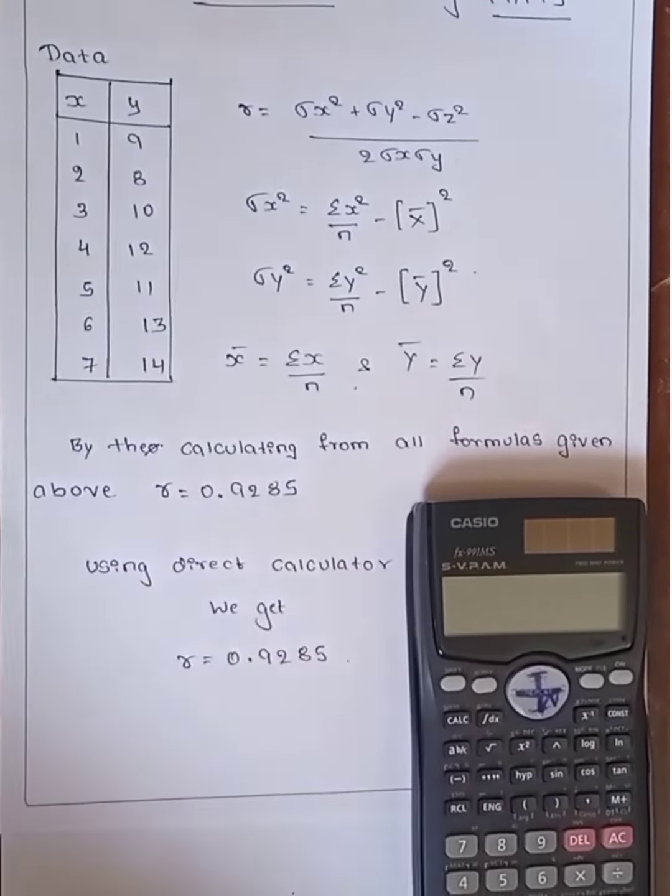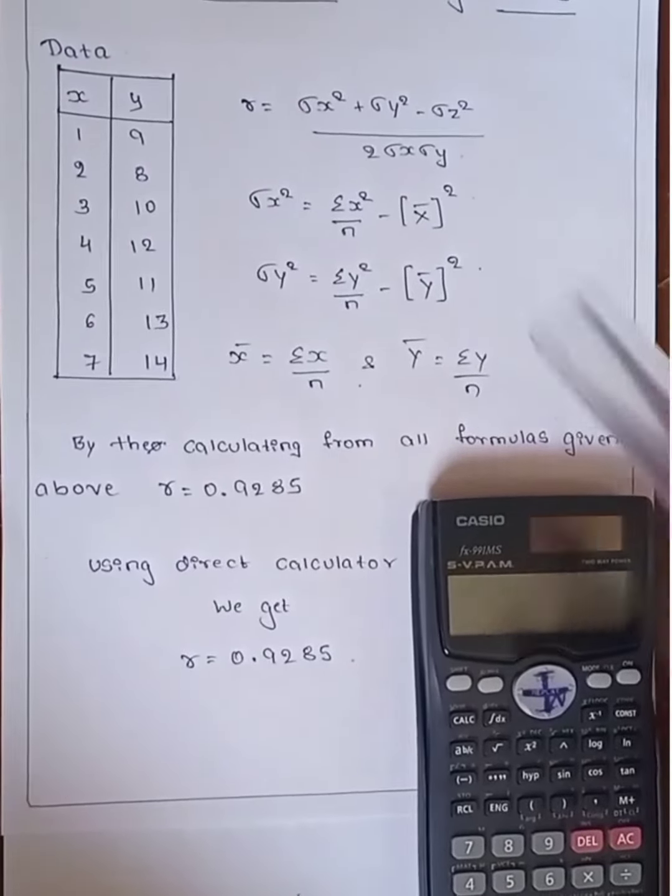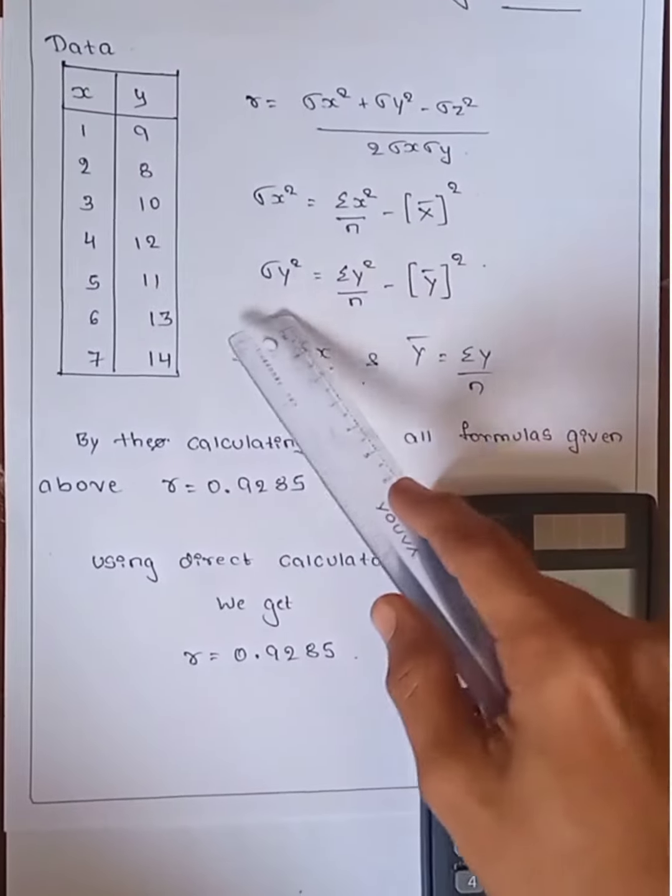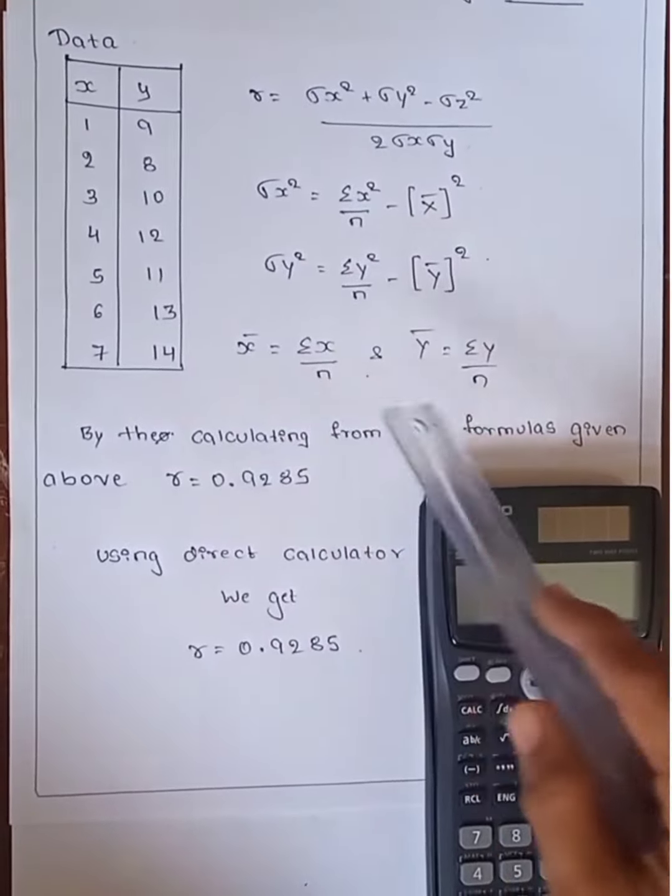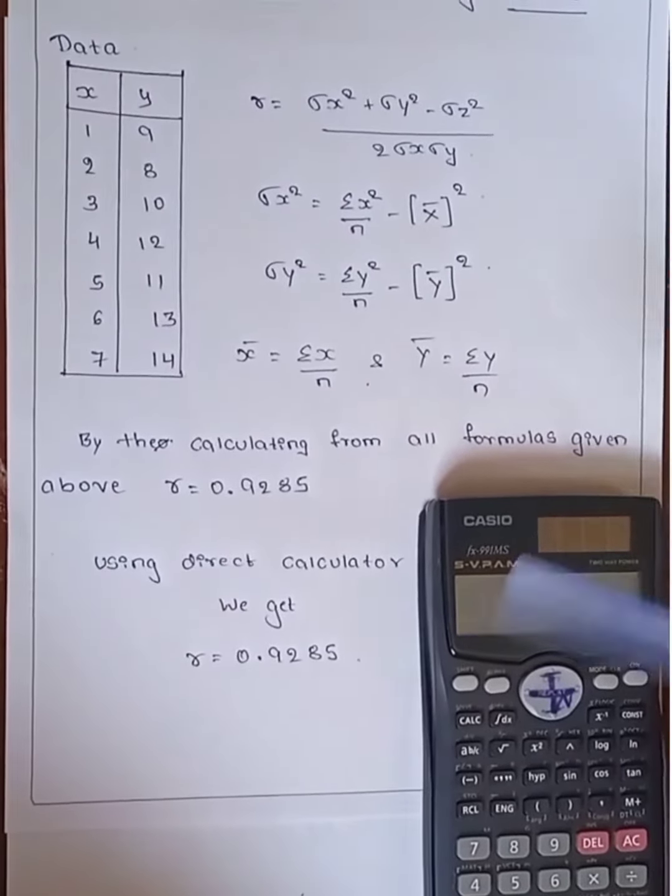To calculate the theoretical steps, we need the formulas given in this list. We have to first find sigma x squared, sigma y squared, x bar, and y bar values. After calculating from all these formulas, we get the final answer for the coefficient of correlation: 0.928.